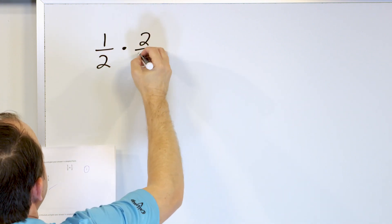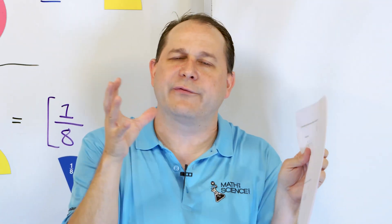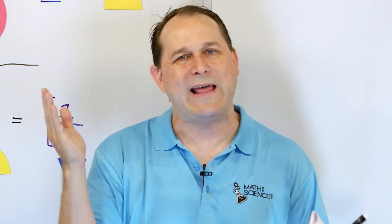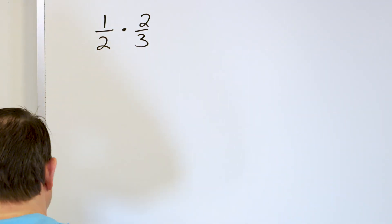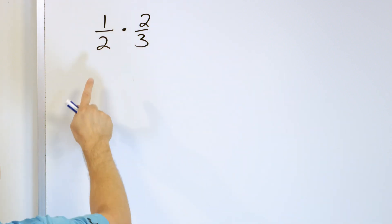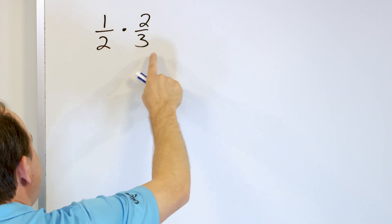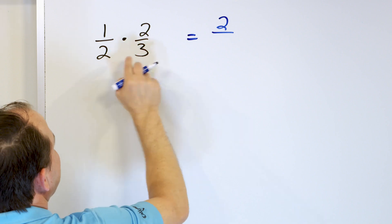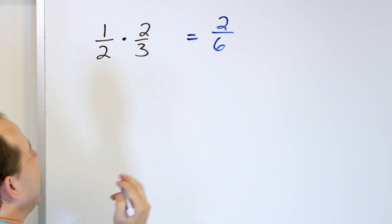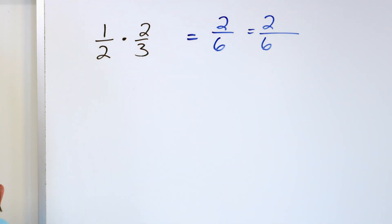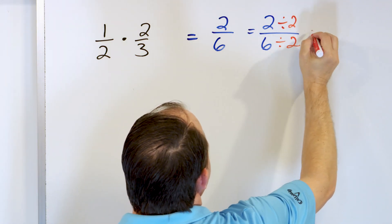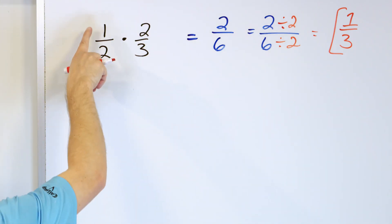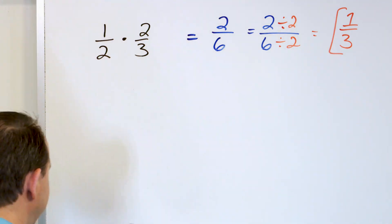Let's take one half times two thirds. I'm using one half so you can visualize what's happening. Two thirds is a larger fraction, so we start with one half of a pizza and chop it down by two thirds. To get the answer, multiply the tops: one times two is two. Multiply the bottoms: two times three is six. We get two sixths. Can we simplify? Yes — both are even numbers. Divide top and bottom by two: two divided by two is one, six divided by two is three. The answer is one third.